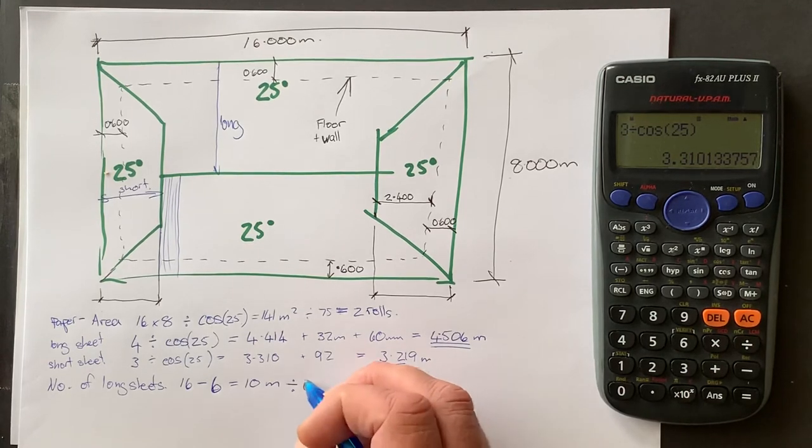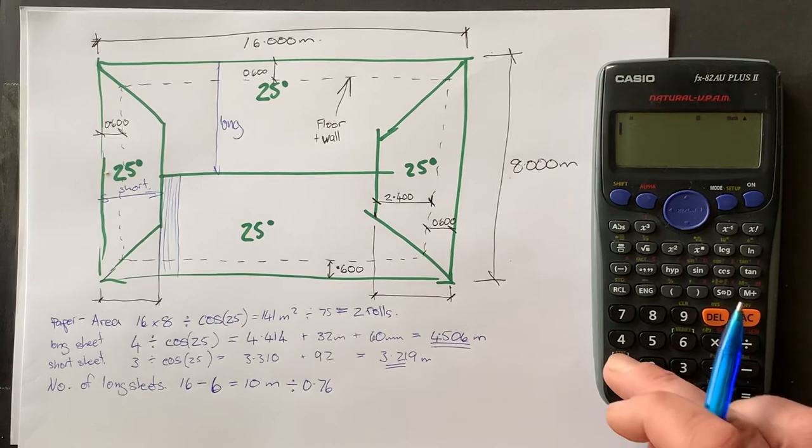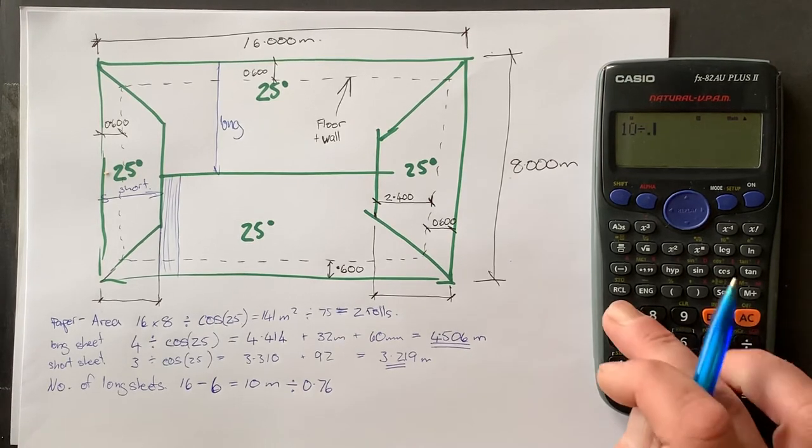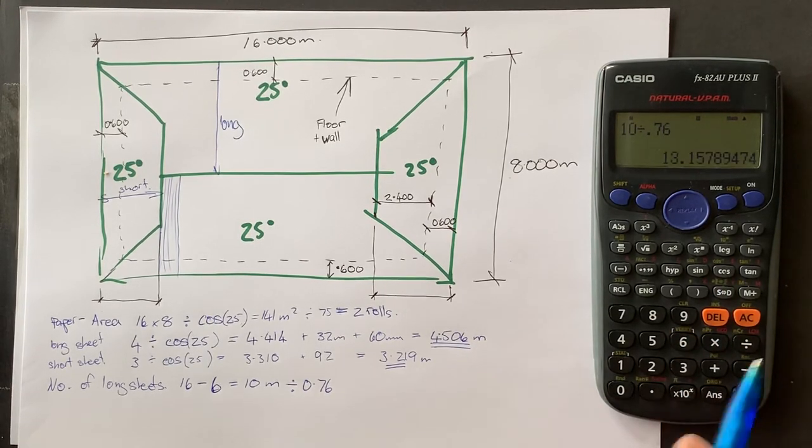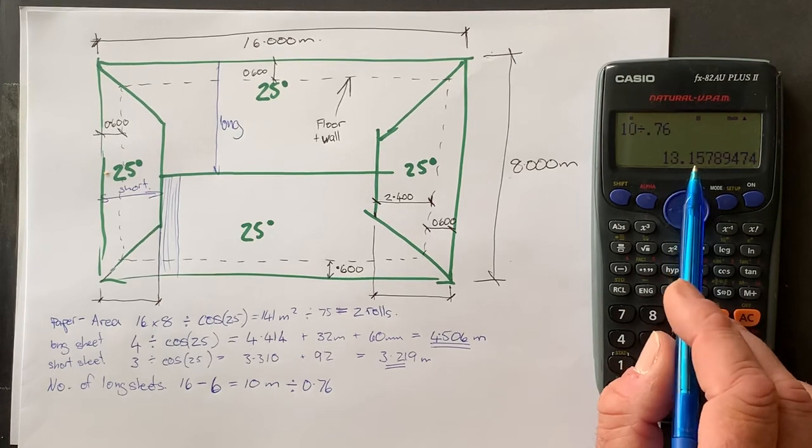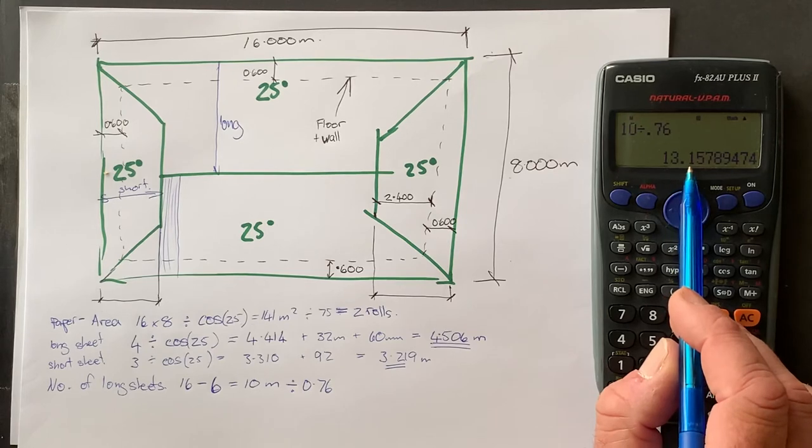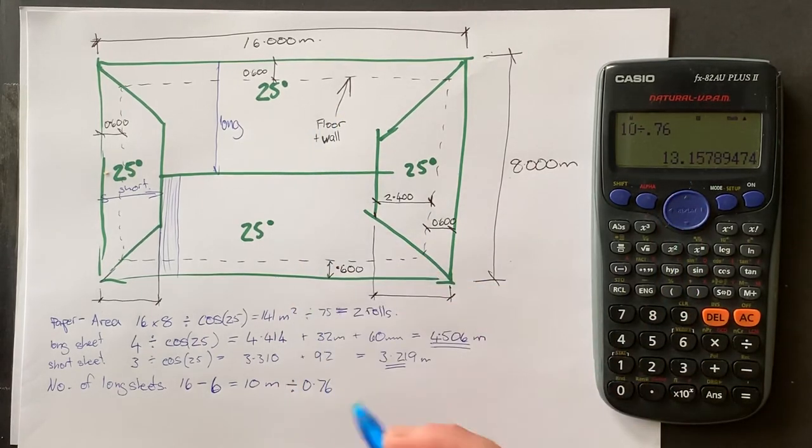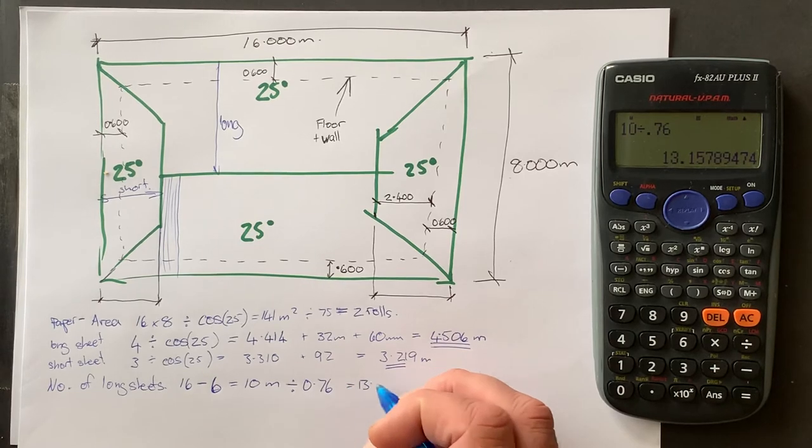So we divide that and that's called the effective cover. So divide that by 0.76. So we say 10 divided by 0.76 equals about 13.1.